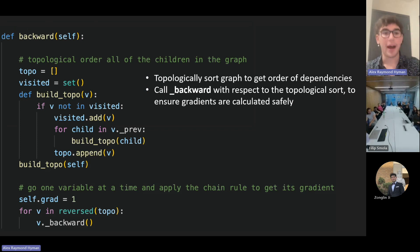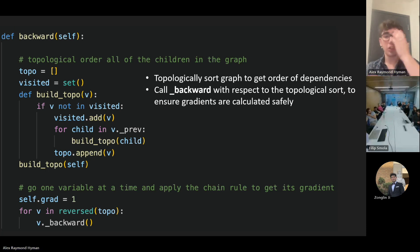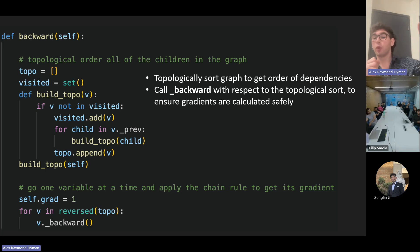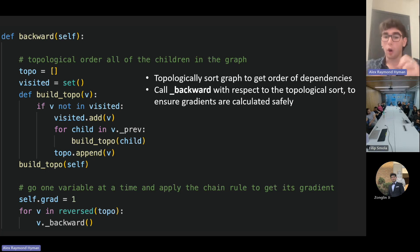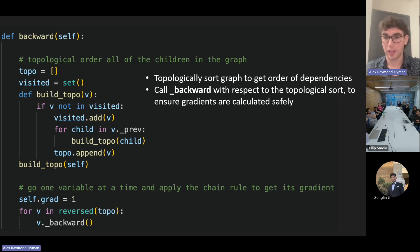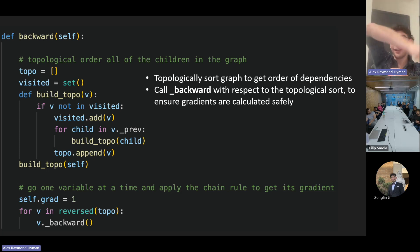Let's look at Karpathy's backward function — his RAD algorithm. The first chunk produces a topological sort of the graph to ensure that gradients are calculated in a safe order, i.e. we never try to calculate a gradient on a node before all its parents' gradients have been calculated. The next chunk calls _backward with respect to the topological sort, ensuring we only increment the gradient of a node after all its parents' gradients have already been calculated. Once we've done all this, all the additions in the generalized chain rule will have been applied to each node, and we will have calculated the gradient for each node.